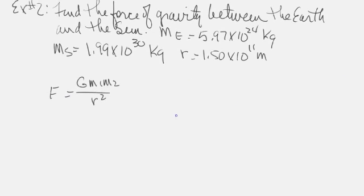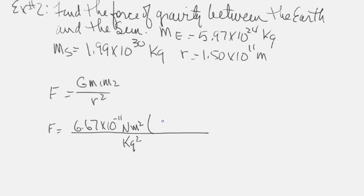Doing a little plug and chug of the numbers. The force of gravity equals 6.67 times 10 to the minus 11 newton meters squared per kilogram squared times the mass of the earth first, and the mass of the sun.